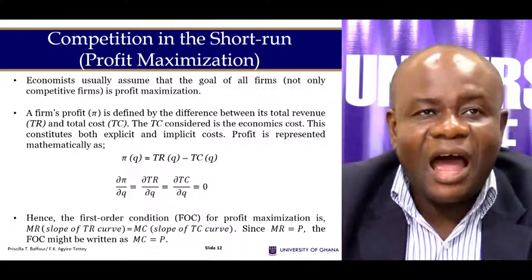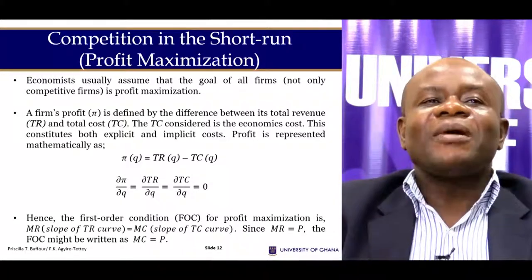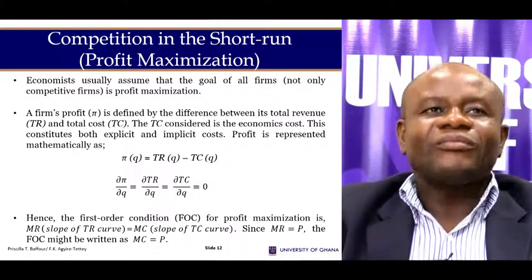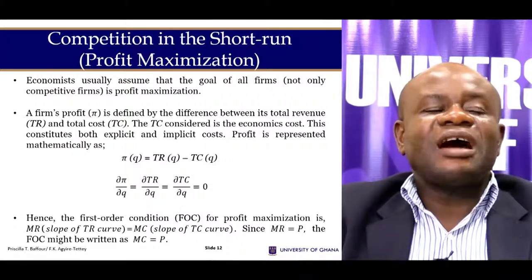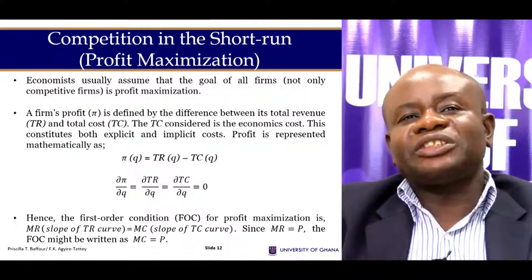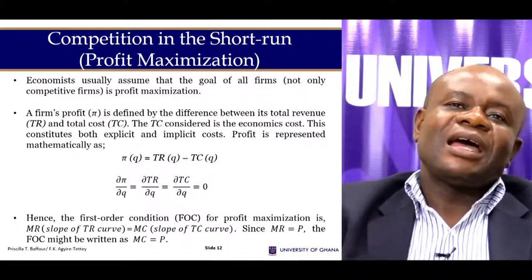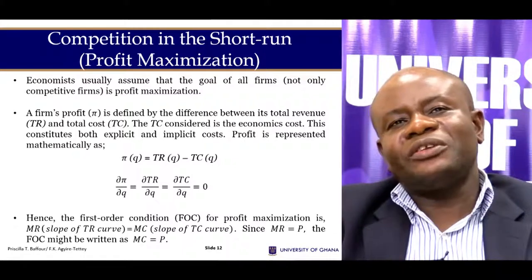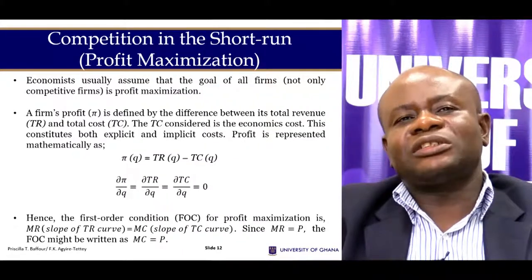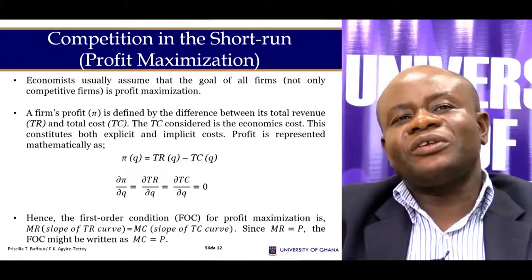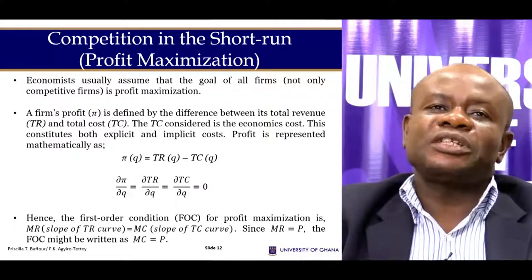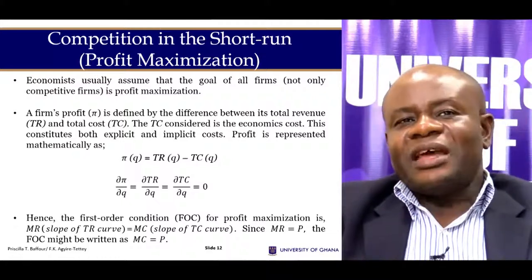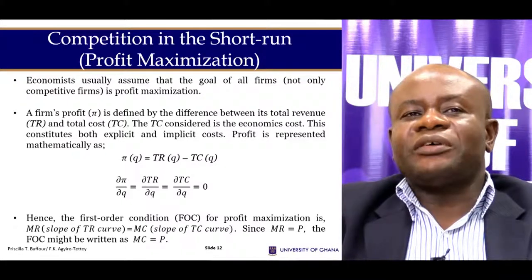The question is how does a perfectly competitive firm maximise profit? To do that, we first have to determine the profit function of our firm. The profit of the firm is the total revenue minus total cost. Remember that total revenue is a function of output, and total cost is also a function of output. So if I take total cost out of total revenue, I have my profit.